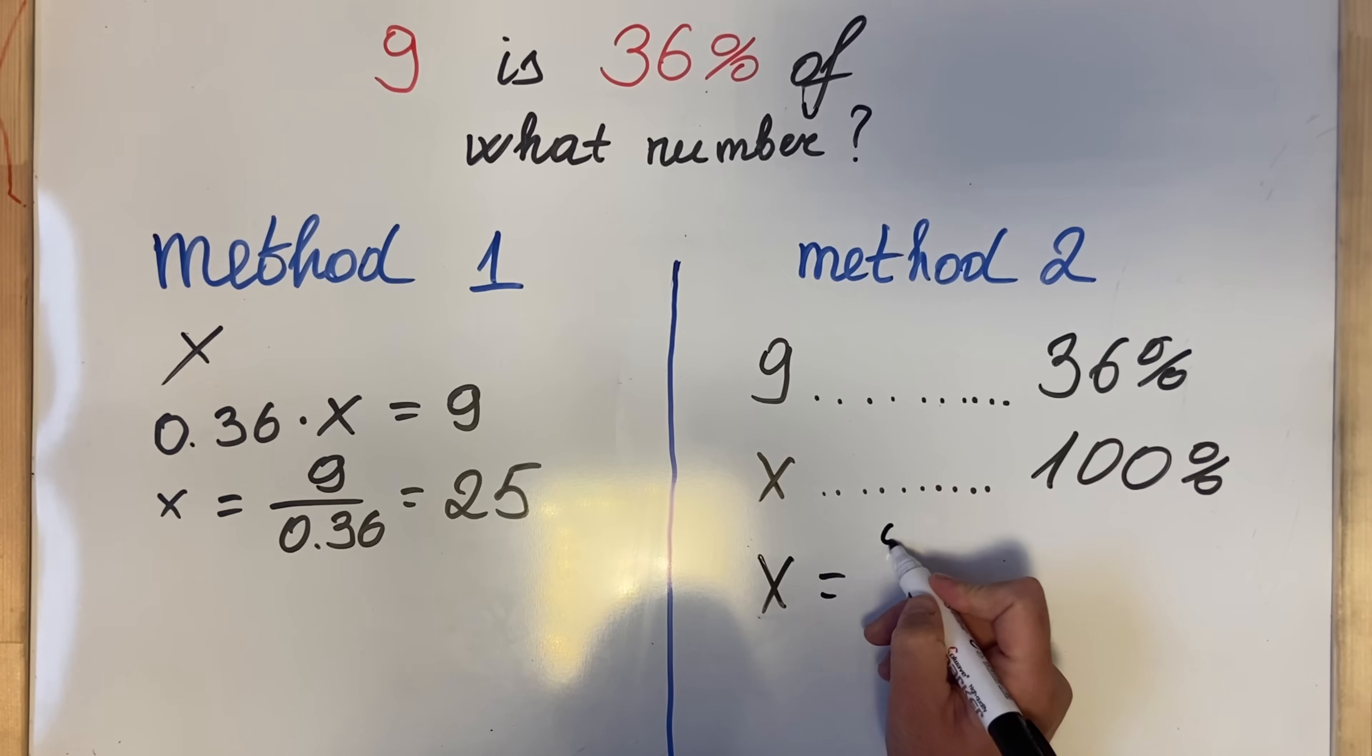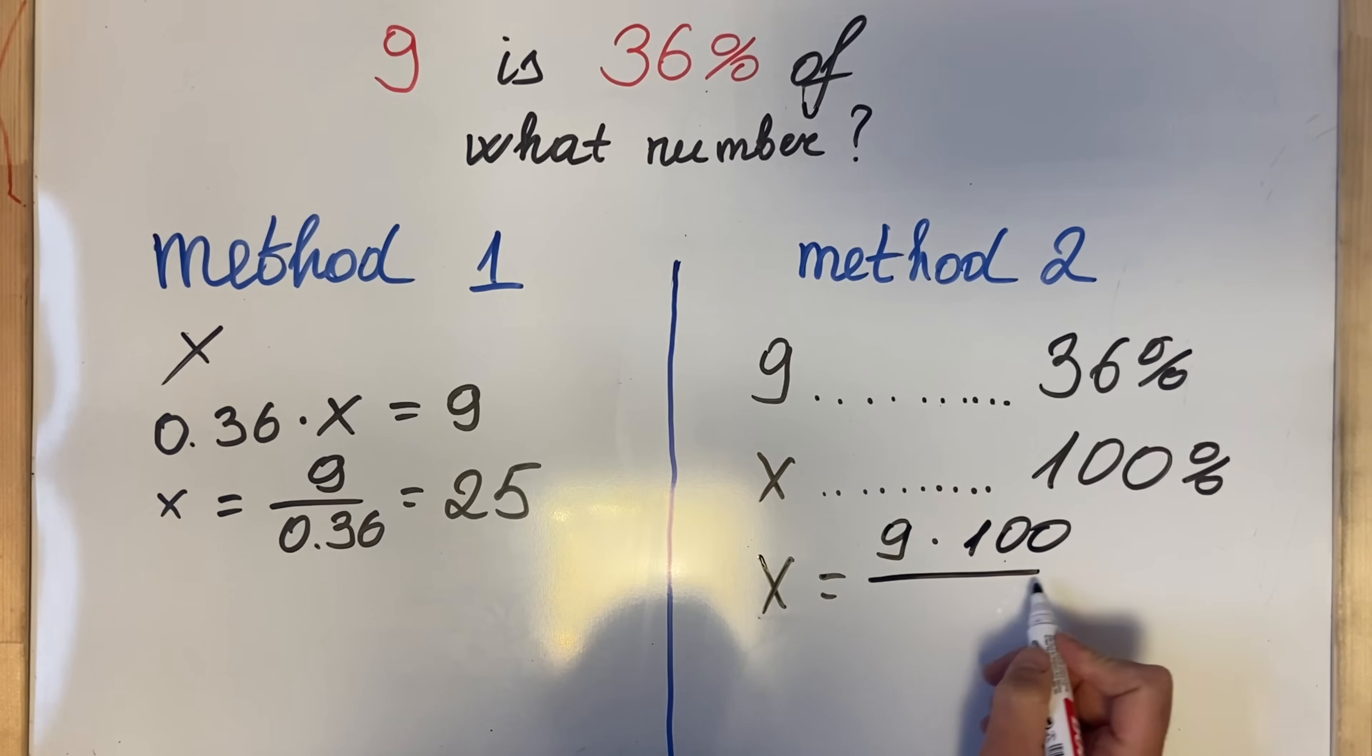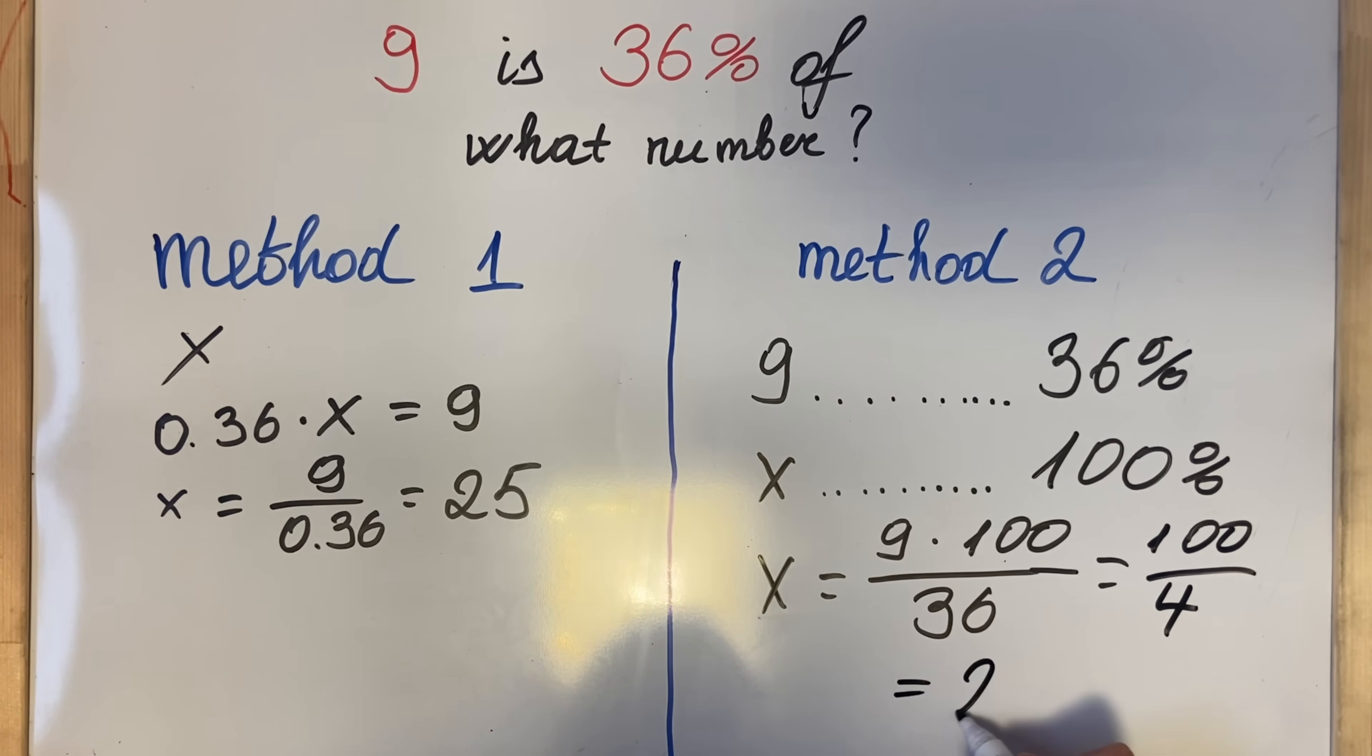And divide it by 36. Then we simplify: we can divide both 9 and 36 by 9, so we have 100 over 4, which is 25.